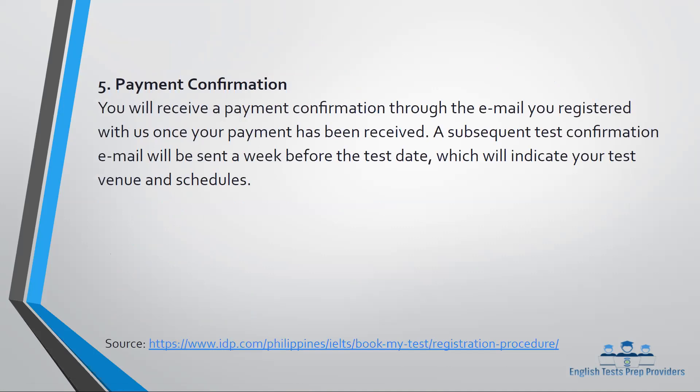The fifth step: you will receive a payment confirmation through your email. Make sure you check and refresh your email, as you will receive a confirmation of your payment. Keep in mind that British Council and IDP IELTS Australia communicate and post announcements through your email, so make sure you are active — especially one to two weeks before your test date — as they will send you the venue, schedule, and address of your test center.